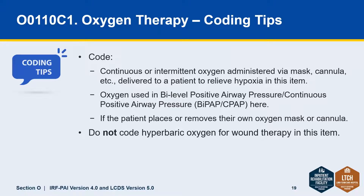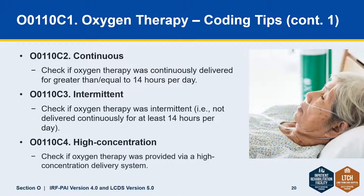Now let's walk through some of the tips for coding oxygen. You code continuous or intermittent oxygen administered via a mask or a cannula delivered to relieve hypoxia. You would also code oxygen used in BiPAP or CPAP here, even if the patient places or removes their own oxygen mask or cannula. You would not code hyperbaric oxygen for wound therapy. You would check C2, continuous, if the oxygen was being administered continuously, delivered for greater than or equal to 14 hours a day. And C3, intermittent, would be used if the oxygen was intermittent, defined as not delivered continuously for at least 14 hours per day.